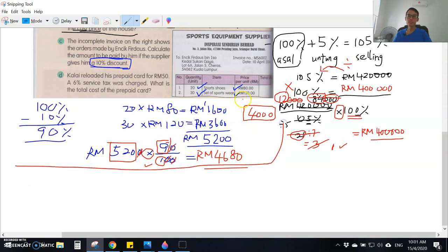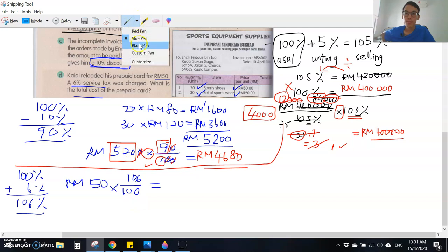Last question: Kalai reloaded his prepaid card for RM50. A 6 percent service tax was charged. What is the total cost of the prepaid card? He bought a reload for RM50 and he has to pay 6 percent tax. So the original price 100 percent plus tax 6 percent - the total to be paid is 106 percent. So you times 106, write it as per hundred.